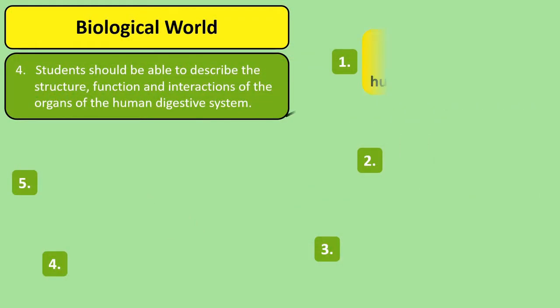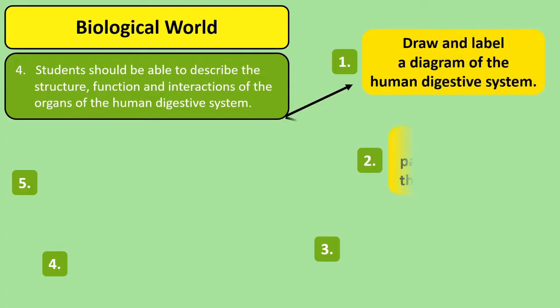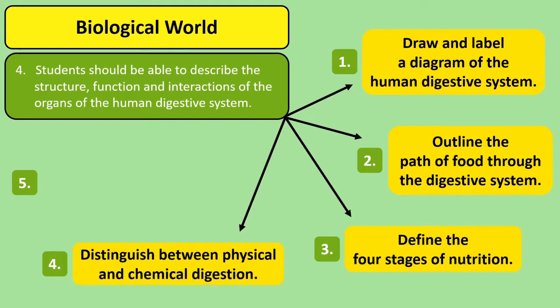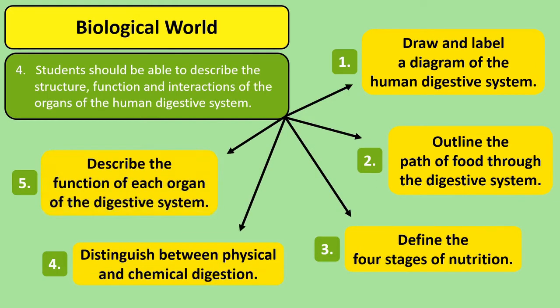These include being able to draw and label the digestive system, as well as plotting the path that food takes through it. You also need to know what the four stages of nutrition are, the difference between physical and chemical digestion, and finally what each organ of the digestive system does.